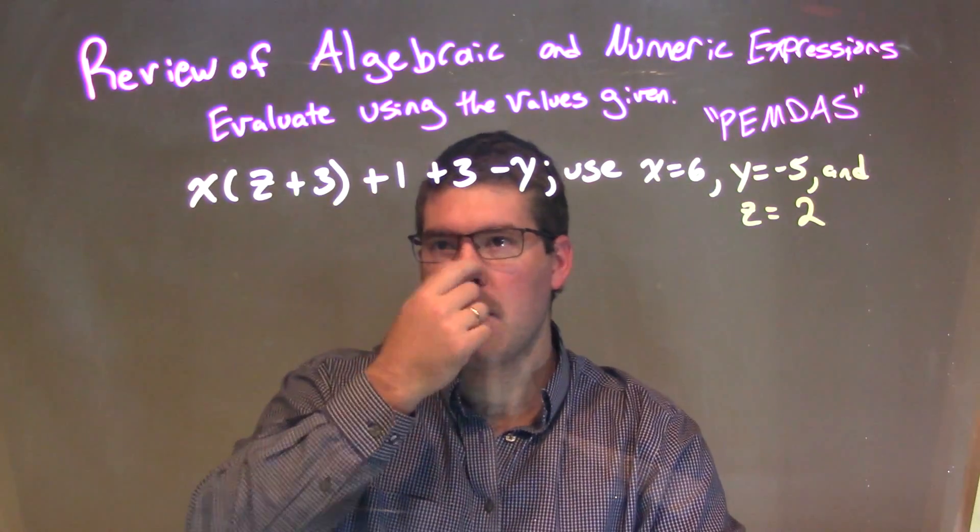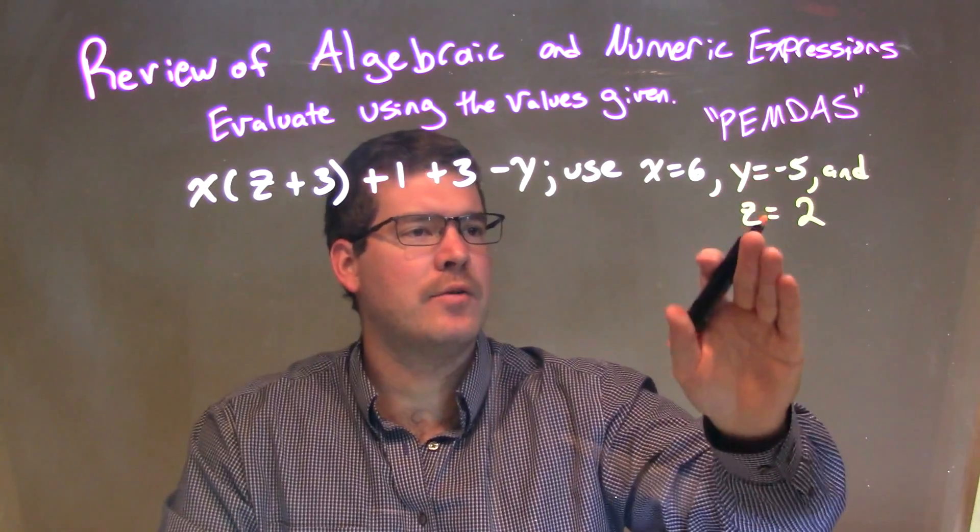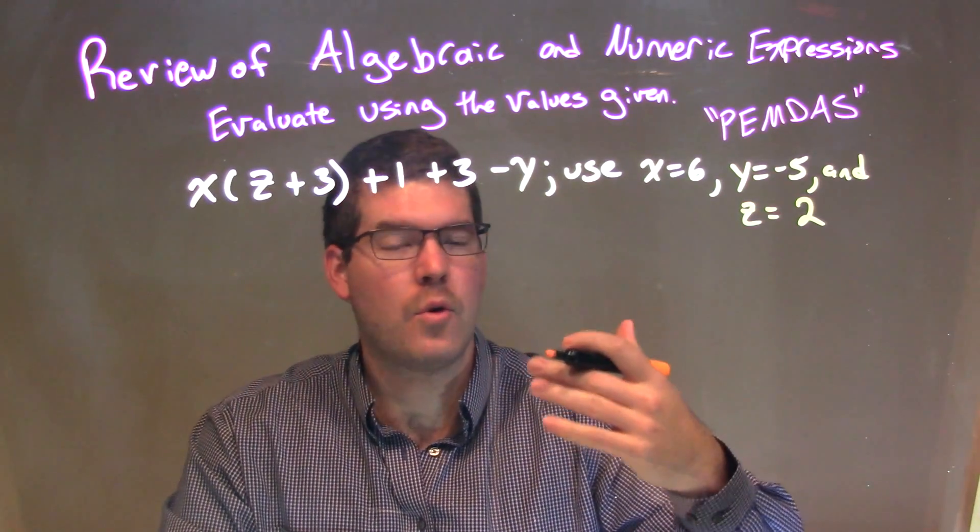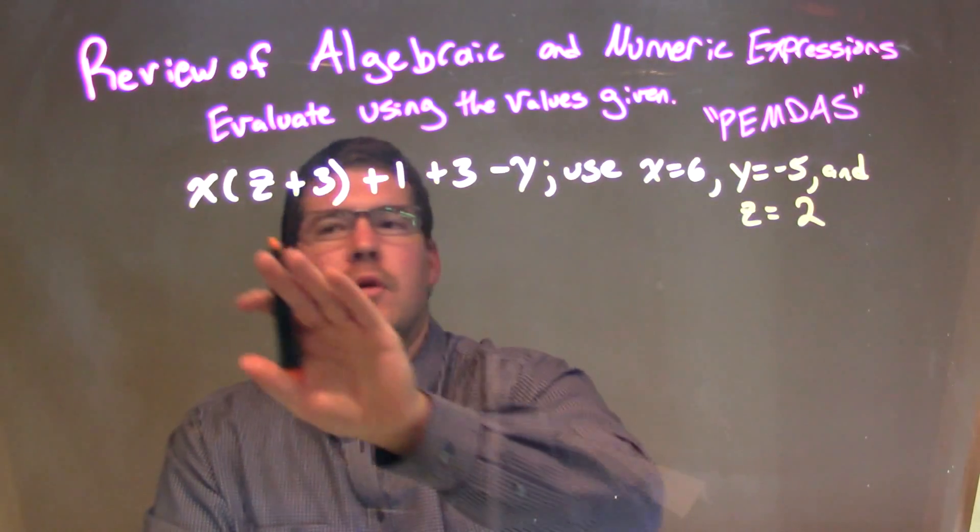Well, what I want to do now is I'm going to take my expression, and every single time I see an x, y, or z, I'm going to substitute in the corresponding number: 6, negative 5, and 2. So, let's go do that.